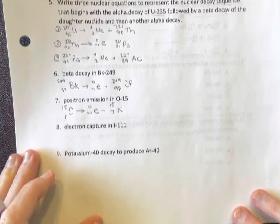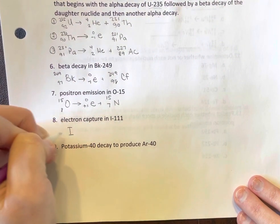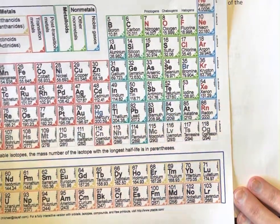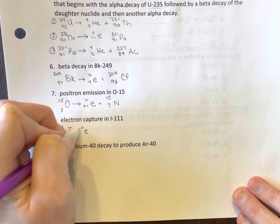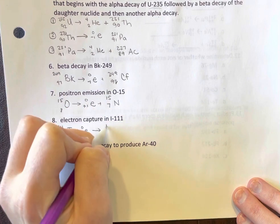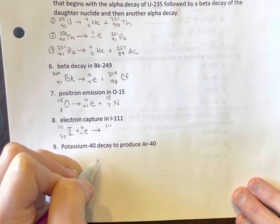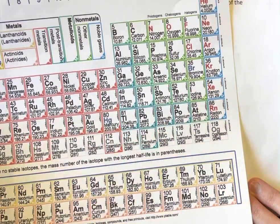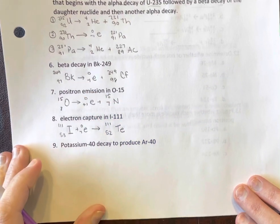If not, use your periodic table. Electron capture. Iodine-111. Iodine is atomic number 53. And it's going to capture an electron in the nucleus. No change in mass number. Atomic number goes down by one. And 52 is tellurium.